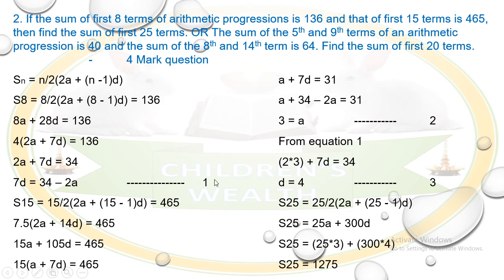From Equation 1: 2a + 7d = 34. Substituting a = 3: 2×3 + 7d = 34, so d = 4. Now, using the formula S₂₅ = 25/2 × (2a + 24d), we get S₂₅ = 25 × (3 + 48) — that simplifies as 25×3 + 300×4.